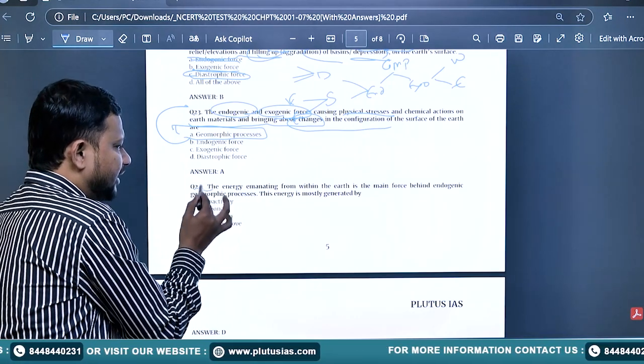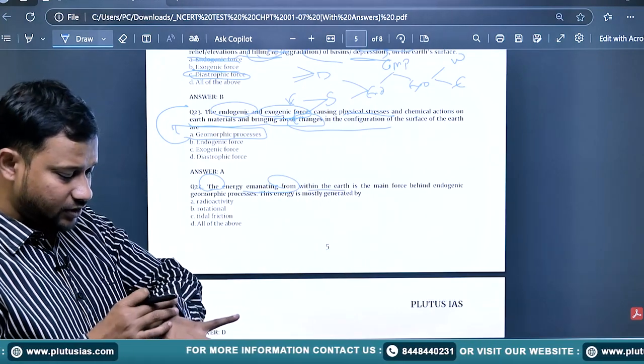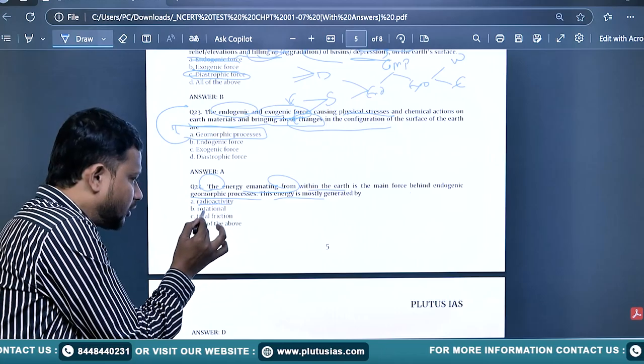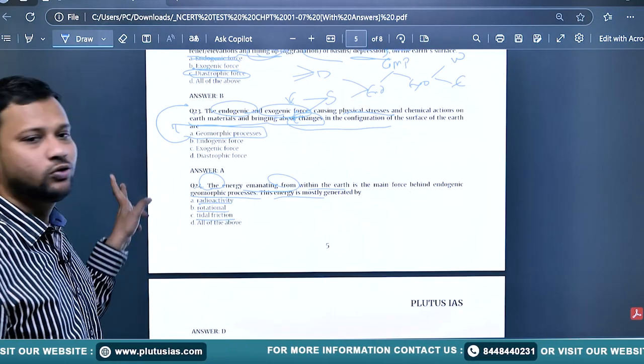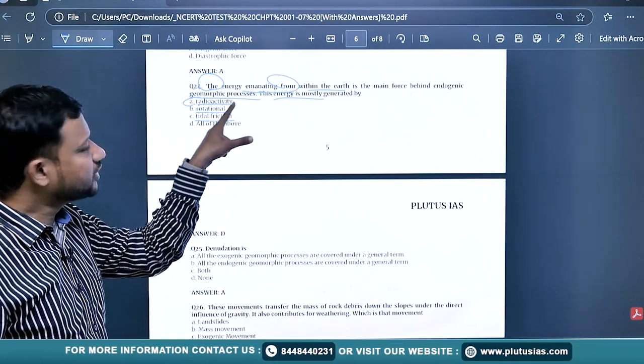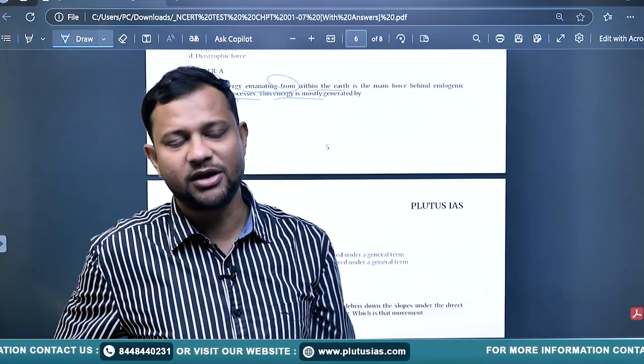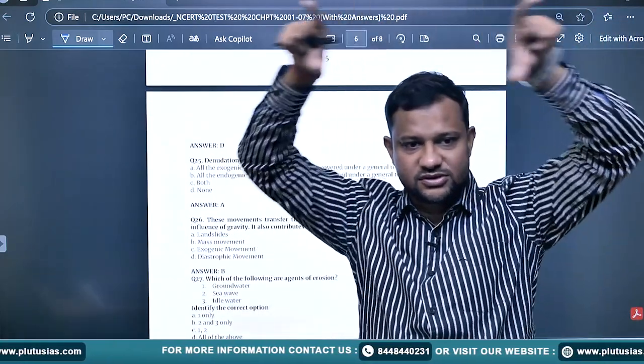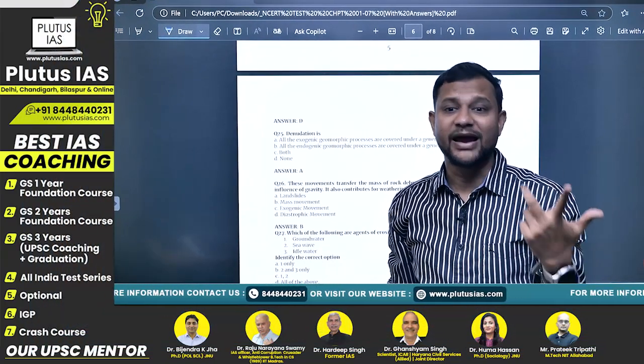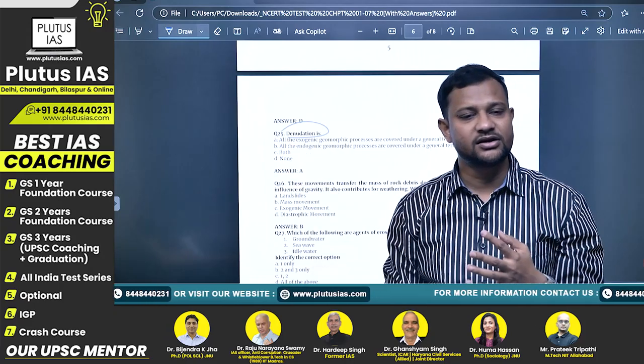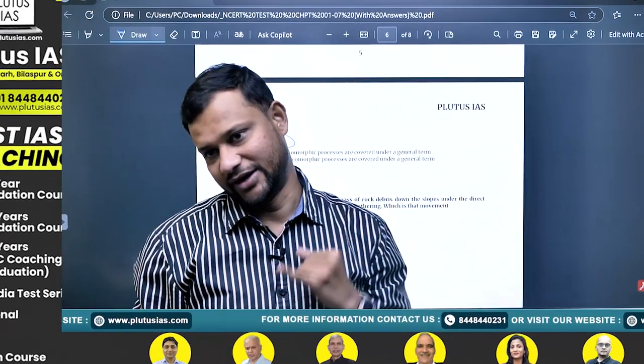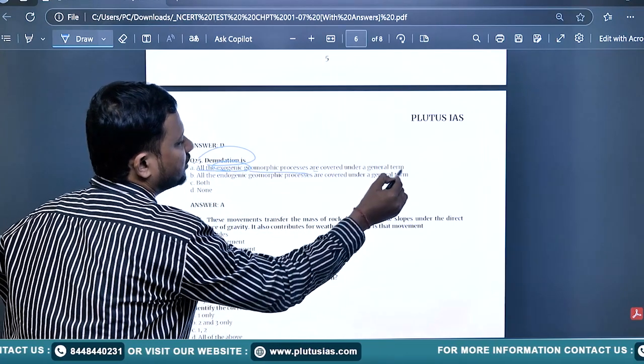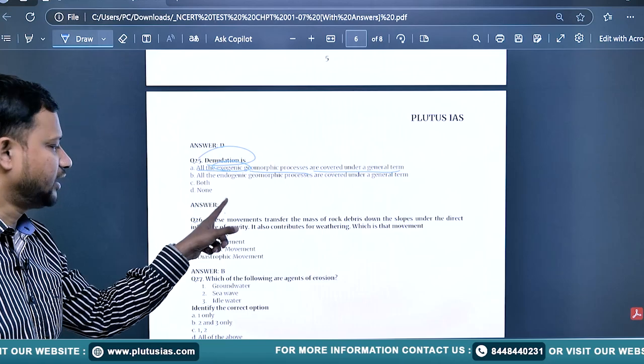The endogenic and exogenic forces causing physical stresses and chemical actions on Earth materials and bringing about changes in the configuration of the surface are geomorphic processes. You should have understanding about the definition of geomorphic process. Every question has some logic and reasoning behind it. The energy emanating from within the Earth is the main force behind endogenic geomorphic processes. This energy is mostly generated by radioactivity, rotational force of the Earth, and tidal friction. Answer should be all of the above. Radioactivity is one of the most dominant, but all three are equally contributing.